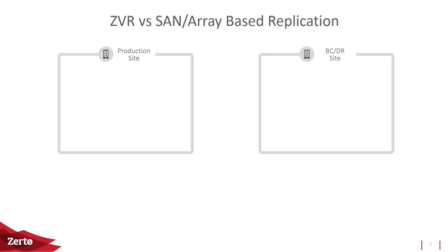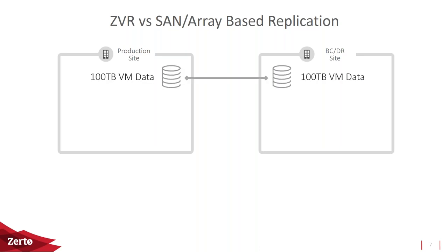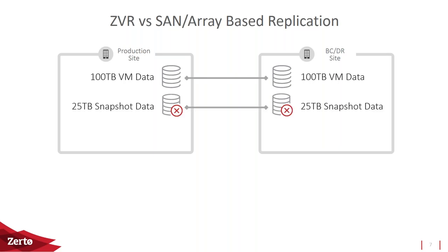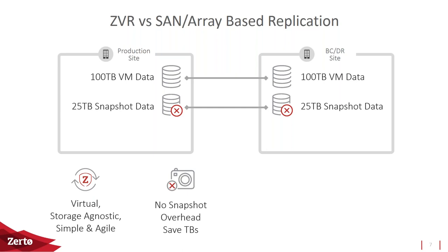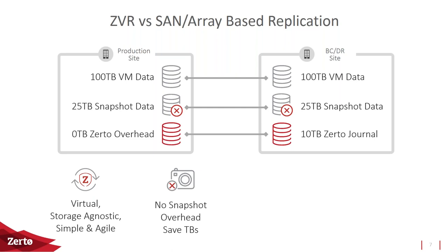Looking at Zerto versus array-based replication: you have your production site and BCDR site with an initial copy, say 100 TB. With array-based replication you're typically looking at 25–40% overhead depending on your data and how many snapshots you keep, and you need that on both sites. Zerto is completely virtual — all virtual appliances and machines — with no hardware dependencies, storage-agnostic, and very simple to install. No snapshots at all means there's zero overhead on the source site and typically about 10% on the recovery site.